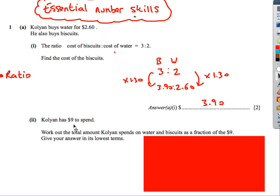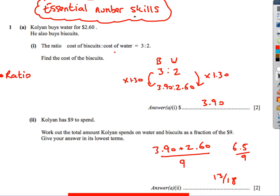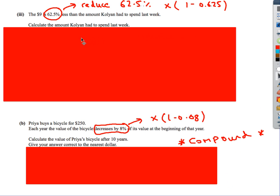The next one. You've got $9 to spend. Total amount spends on water and biscuits as a fraction of the $9. We know that we spent $2.60 on the water. On the biscuits, we spent $3.90. So the total amount that she spent was $6.50 as a fraction of $9. Therefore, $6.50 over 9. We want to make it into a whole number fraction, so $13 over 18.